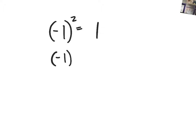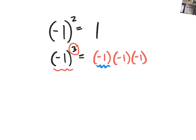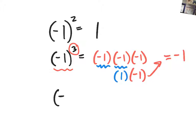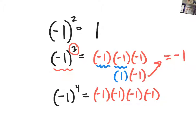Working with negative one inside parentheses: negative one squared is positive one. Negative one to the third power is negative one — because if you write the base out three times, it's negative one times negative one times negative one. A negative one times a negative one is positive one, and positive one times negative one takes you back to negative one. Negative one to the fourth power: expanding it is negative one times itself four times — a negative and a negative is positive, a negative and a negative is positive — so your final answer is positive one.